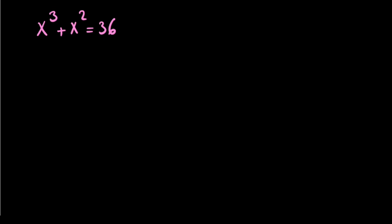Welcome to Math Speed Market. Today we're going to solve a really nice problem from the Canadian Math Olympiad. If you have x cubed plus x squared equals 36, we know that x is a complex number, and we want to find x.